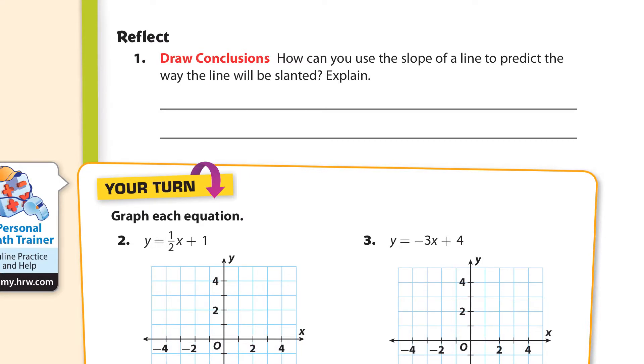And now we have a drawing conclusions question. How can you use the slope of a line to predict the way the line will be slanted? Well, I would say a positive slope will be slanted upwards from left to right. And a negative slope would be slanted downwards from left to right.